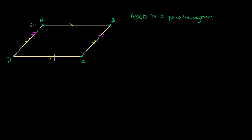If we draw a diagonal AC, we can split our parallelogram into two triangles. We've proven multiple times that these two triangles are congruent. AD is equal to BC, DC is equal to AB, and both triangles share this third side AC.